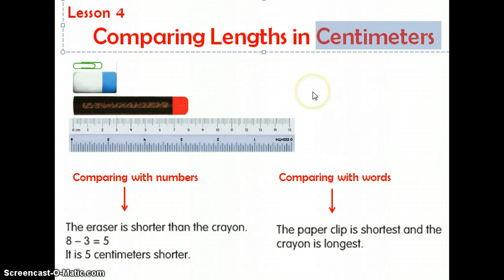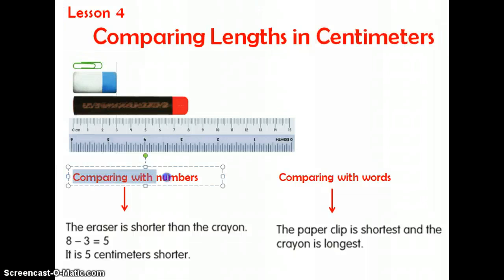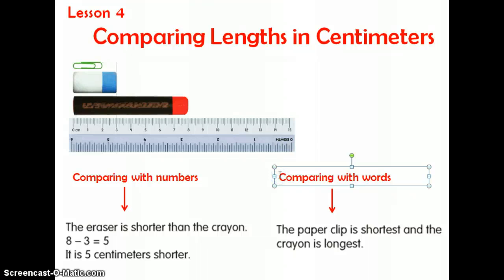If you recall, centimeters are used to measure smaller objects and meters are used to measure larger objects. Now, if you remember from the last lesson, you can compare lengths in two ways. One way is comparing with numbers, and the other way is comparing with words.